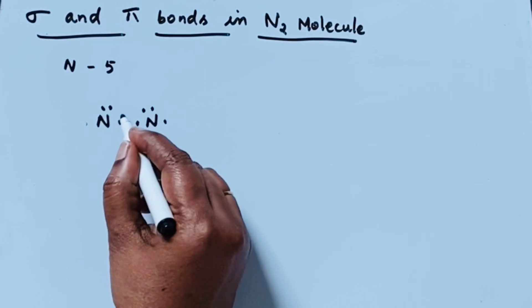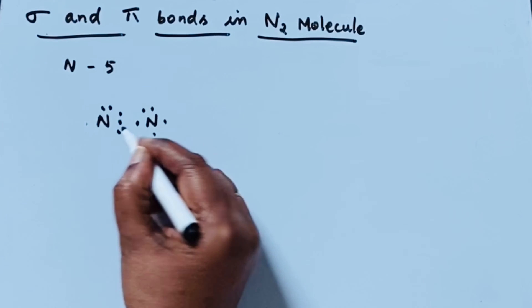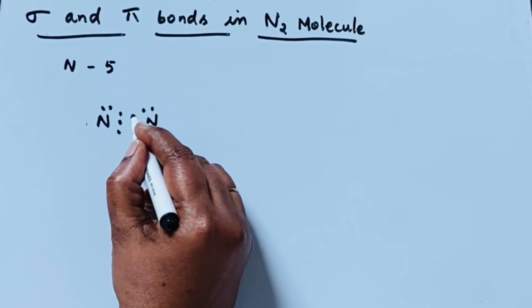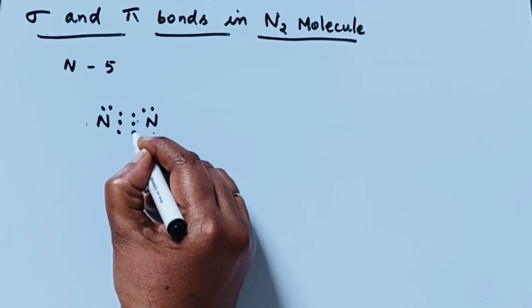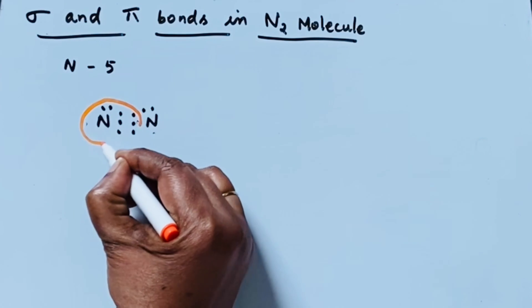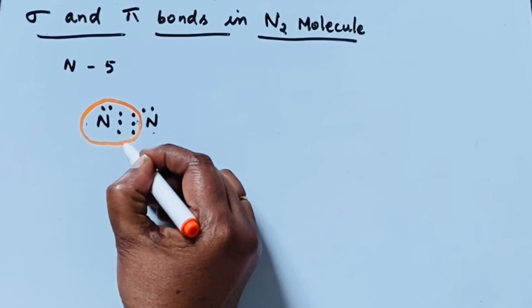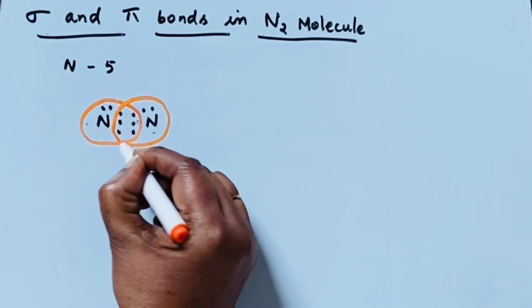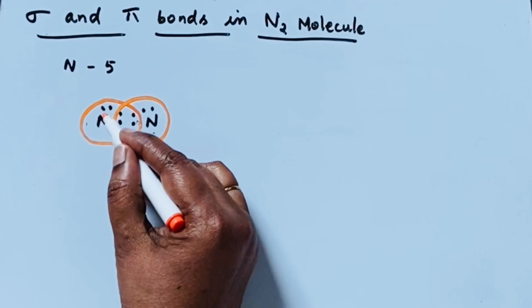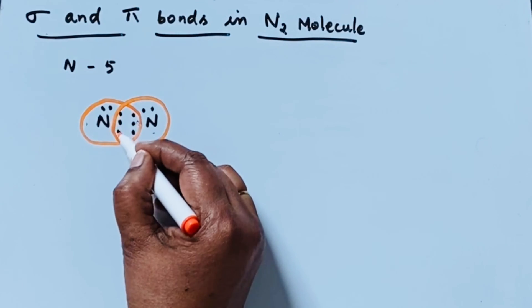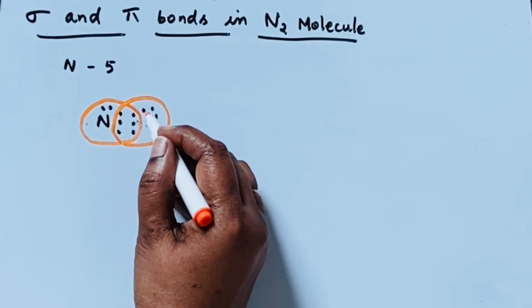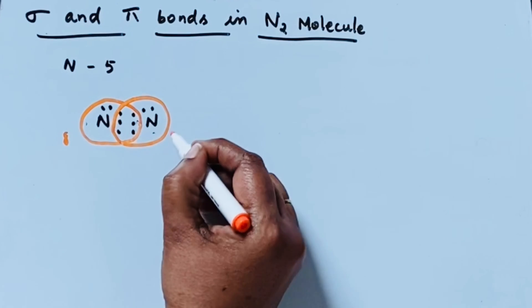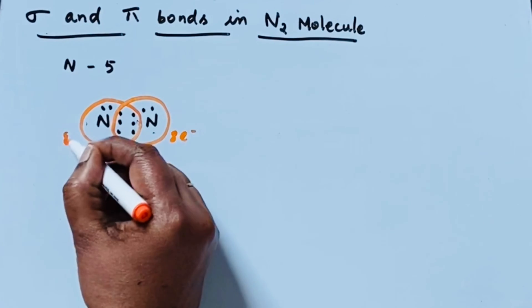So we can count 1, 2, 3 unpaired electrons for one nitrogen atom, and in the same way 1, 2, 3 for the other nitrogen atom as well. Looking at the first nitrogen: 2 plus 5 gives another nitrogen atom also 2 plus 5 equals 8. This means this nitrogen atom has 8 electrons and this nitrogen atom also has 8 electrons, satisfying the octet rule.